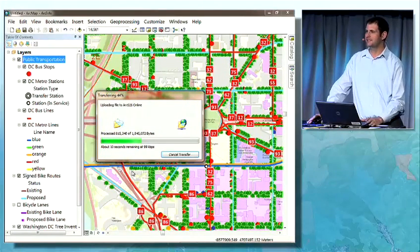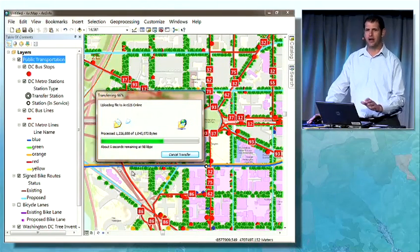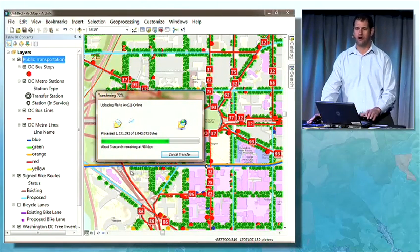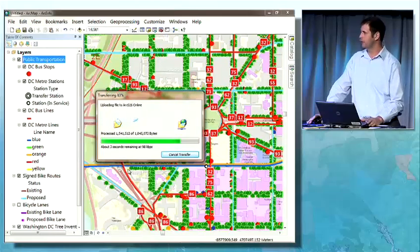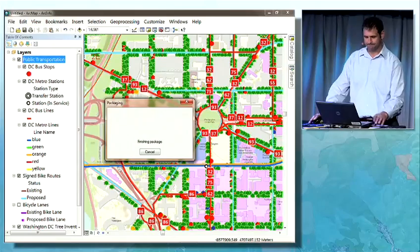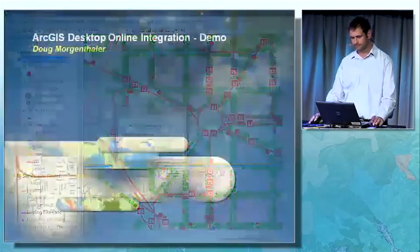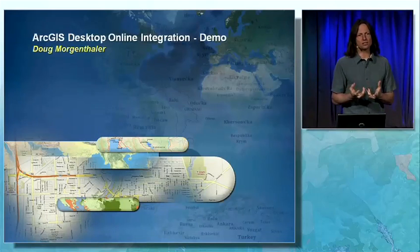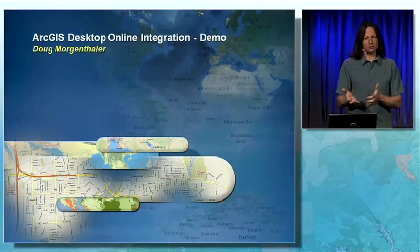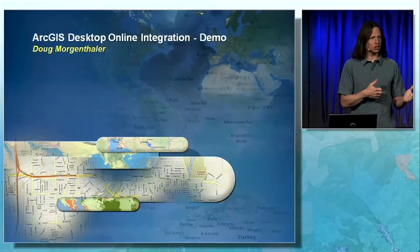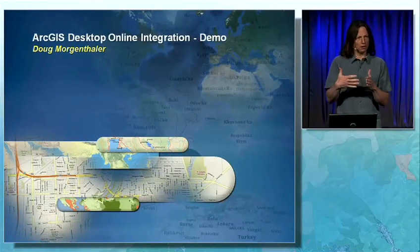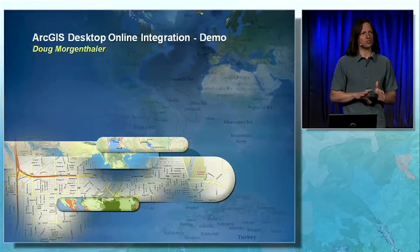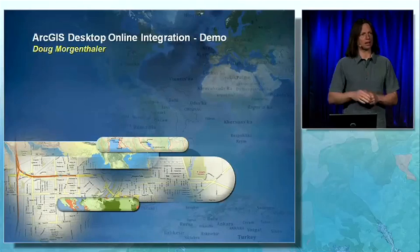Once that completes, other ArcGIS Desktop or ArcGIS Explorer users who are members of that group can make use of that content in their own work. At ArcGIS 10, it's easy to use, share, author, and manage all your online maps and data from within ArcGIS Desktop. So what we've seen there is good integration of online into the desktop applications — Doug consumed content from online and easily shared that content back up to online.